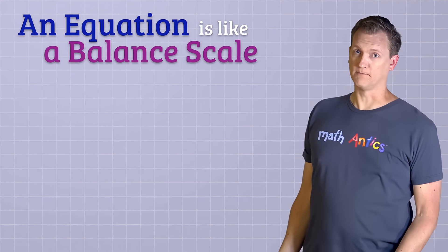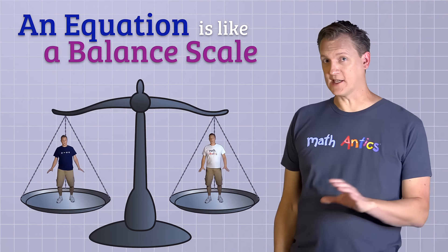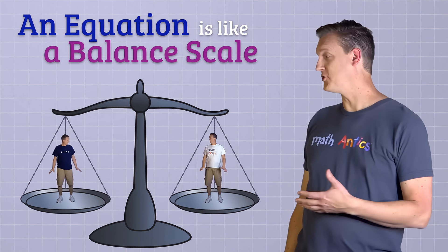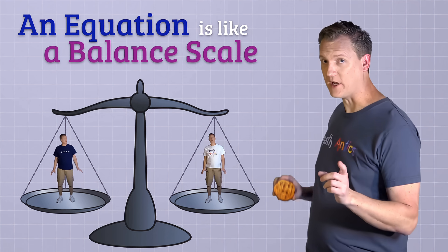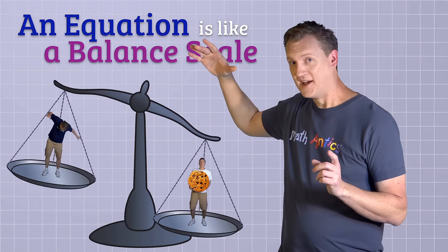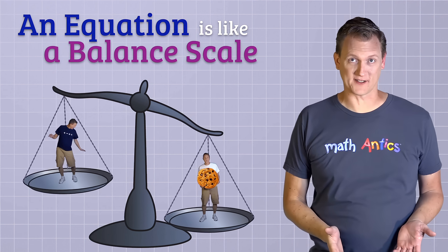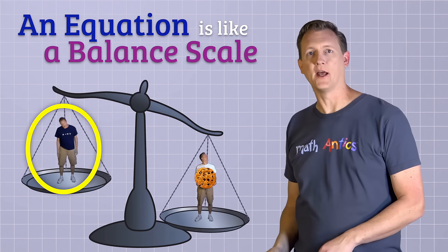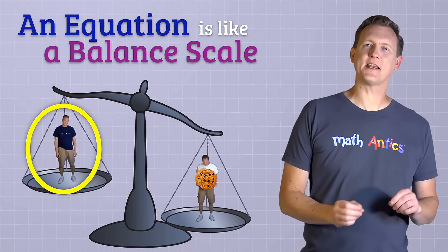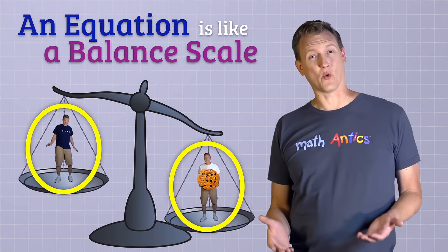We need to understand that an equation is like a balance scale. If there's the same amount of weight on each side of the scale, the two sides are in balance. But if we add some weight to just one side, the scale will tip — the two sides are no longer in balance. An equation is like that: whatever is on one side of the equal sign must have exactly the same value as whatever is on the other side. Otherwise, the equation would not be true.